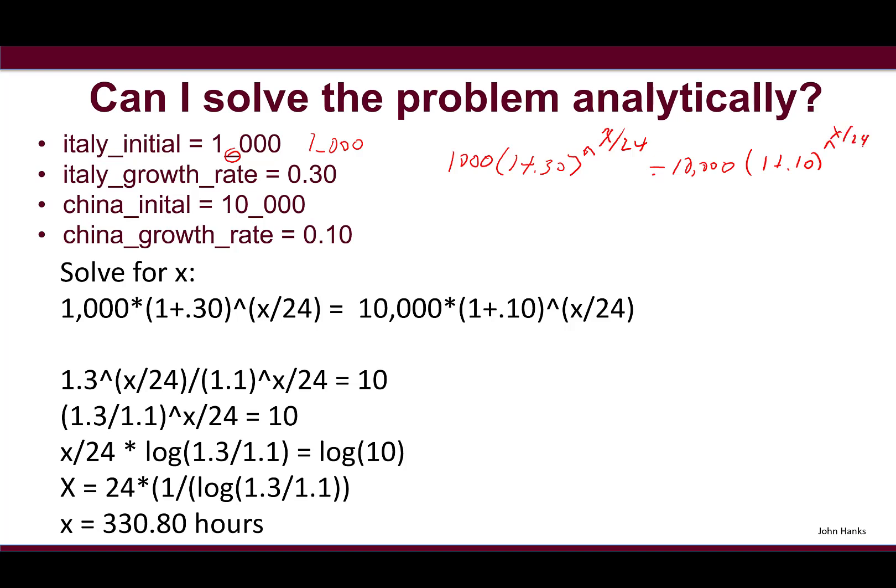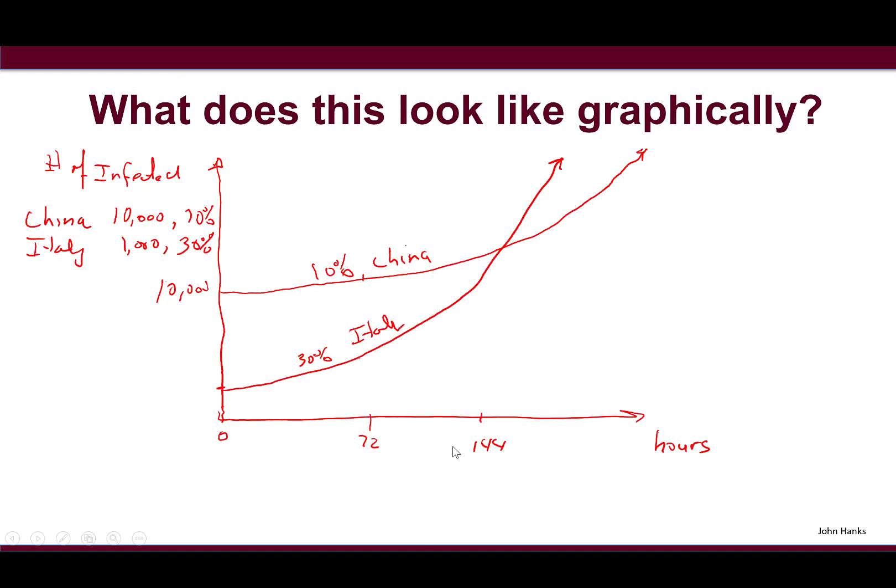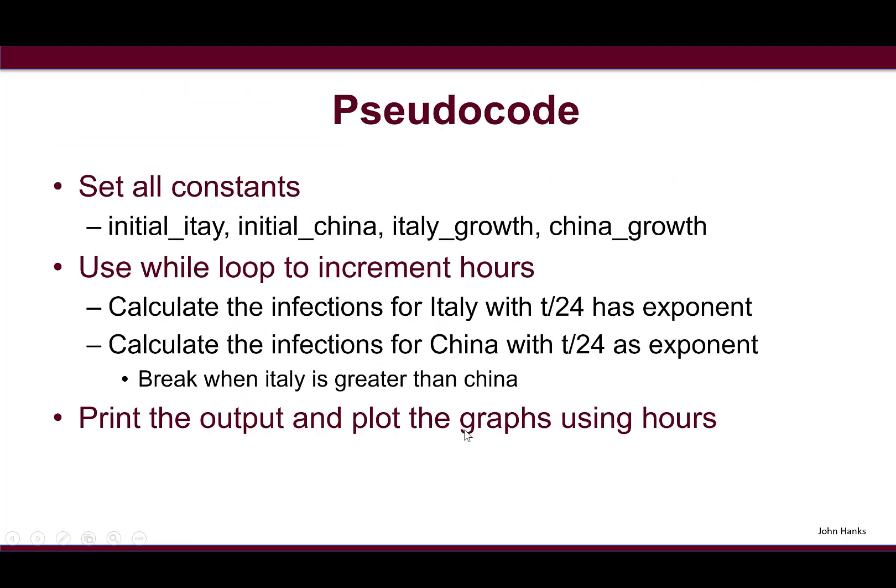If we set up this problem to solve for x, we would take our Italy numbers: 1000(1 + 0.30)**(x/24) equals the China initial number 10000(1 + 0.10)**(x/24). The trick is to use a log function - if you take the log we can bring the exponents down, and then we can solve this equation. X turns out to be around 331 hours.